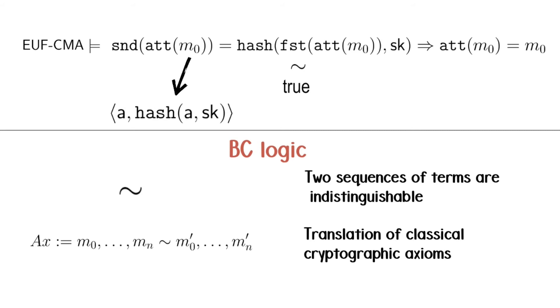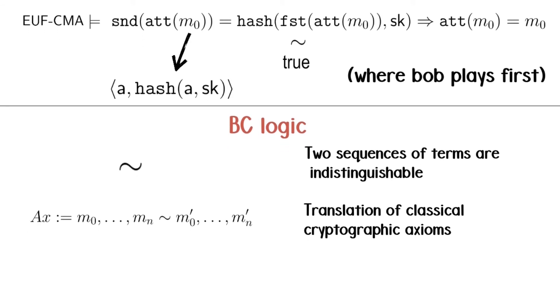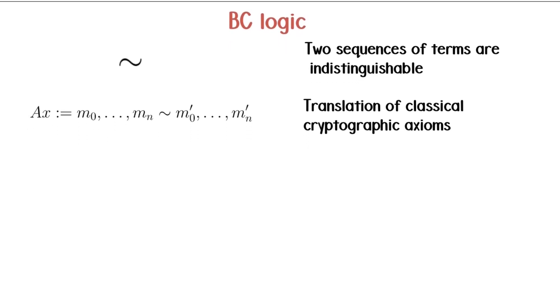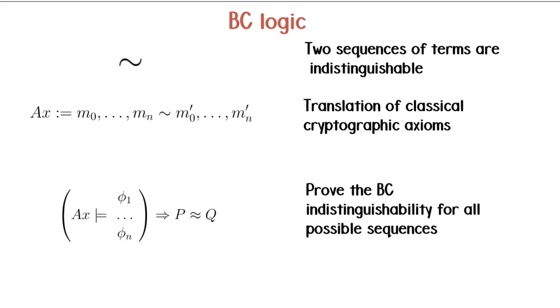Remark that here we only get the authentication property for the first possible sequence of messages of the protocol. We would also need to do it for the other one. And of course, we are not limited to reachability properties. To show the computational indistinguishability of two protocols P and Q, we do so by proving that the axioms entail the BC indistinguishability of their possible sequences of terms. That's it, you know the BC logic.